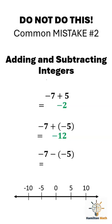This last one trips up a lot of people. Negative 7 minus negative 5. It looks weird, right? Some students treat the two minus signs like one big negative sign and just guess something like negative 12 again. But that's wrong.